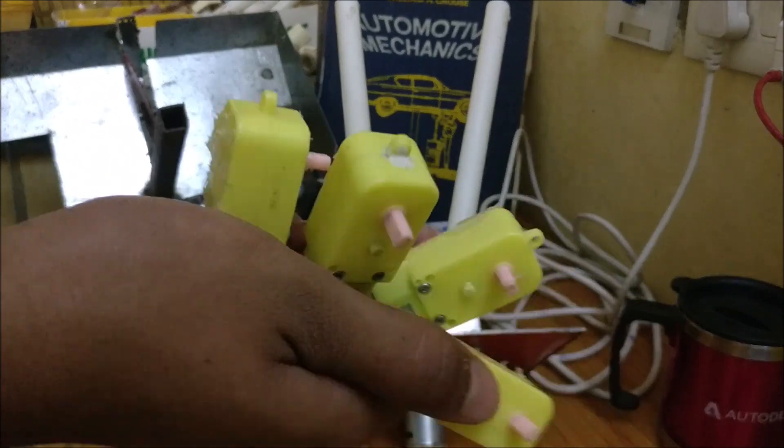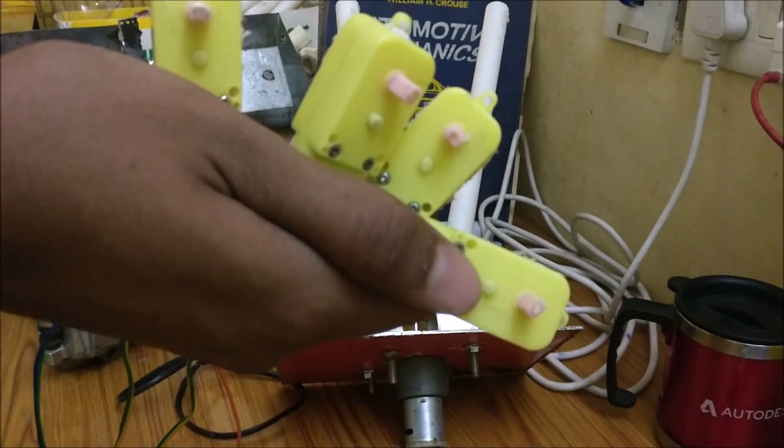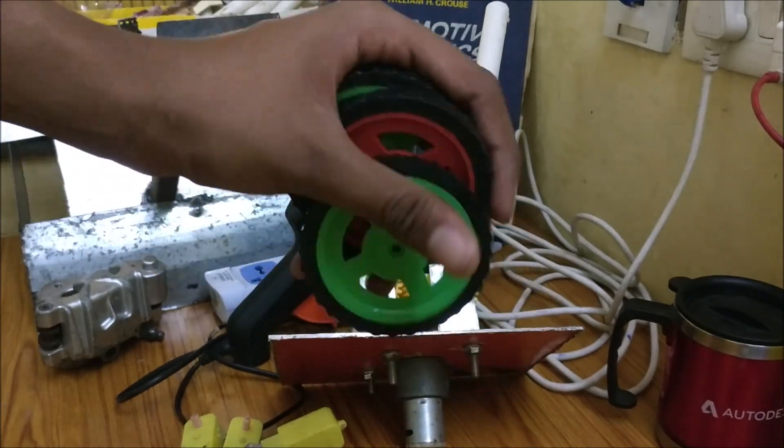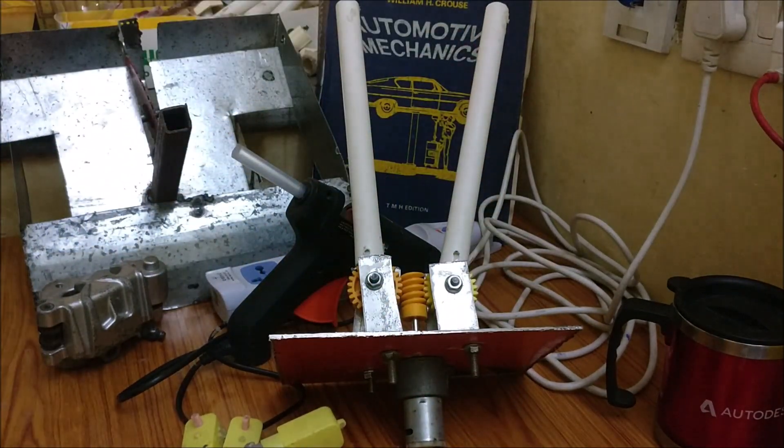You require 400rpm DC geared motor. These are the reducer motors and 4 wheels for it. One, two, three, four wheels. Four wheels you require.